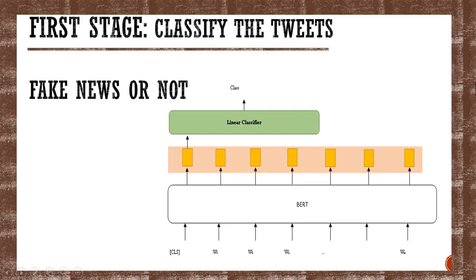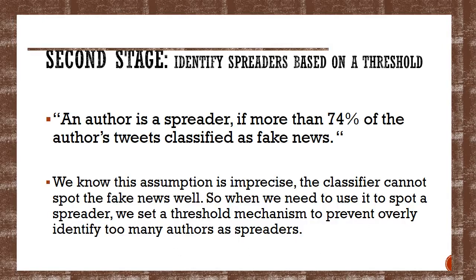As the name suggests, at the first stage, we will use a classifier to classify if the tweets are fake news or not. At the second stage, we identify which authors are spreaders based on a threshold mechanism.